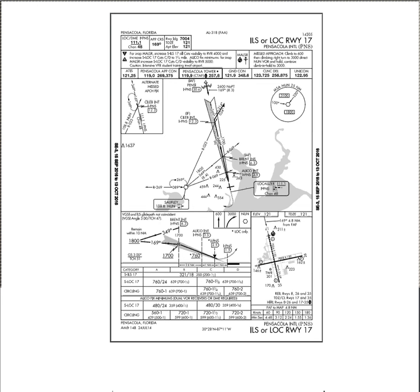Hello. In this video we are going to be talking about ILS and localizer approaches, specifically some common mistakes that I see students making on them. So as you can see up here, we have the ILS or localizer runway 17 at Pensacola International. One of the first things you want to see in the top left corner is that you have the paired DME localizer frequency. What that means is we're going to be getting DME off of the localizer.